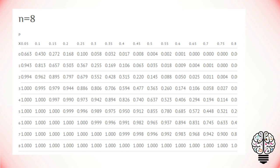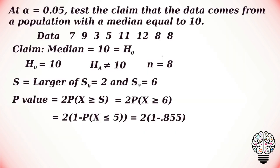So the value we need is found to be 0.855. The probability that X less than or equal to 5 is found to be 0.855. So our value is 2 times 1 minus 0.855, that is calculated as 2 times 0.145.